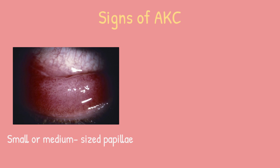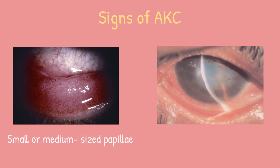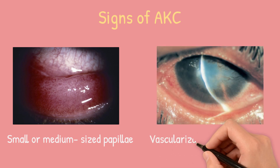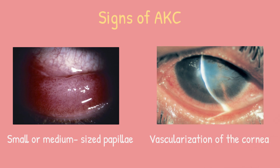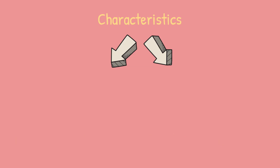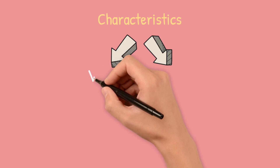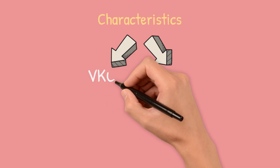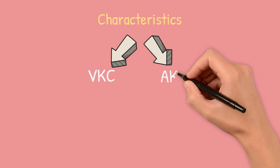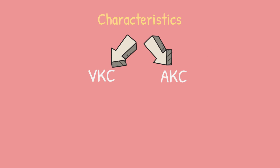Signs of atopic keratoconjunctivitis include small or medium-sized papillae, as opposed to the giant papillae seen in vernal keratoconjunctivitis, appearing in the upper and lower palpebral conjunctiva. There is also vascularization and opacification of the cornea secondary to chronic epithelial disease.